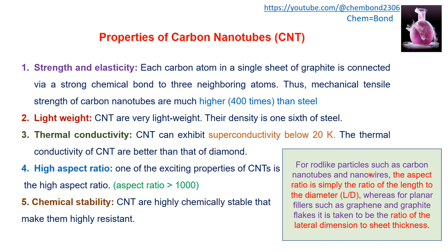Carbon nanotubes can exhibit superconductivity below 20 Kelvin, and their thermal conductivity is much better than that of diamond. They also have a high aspect ratio — greater than 1000 — where aspect ratio for rod-like particles is the ratio of length to diameter. Furthermore, carbon nanotubes are highly chemically stable, making them highly resistant.